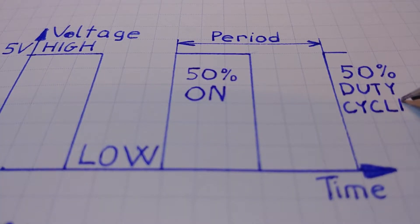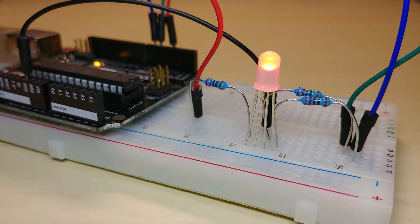So a 50% duty cycle means the signal is in the high state half the time. When we apply this to an LED our eyes kind of average out the on and off times making the LED dimmer. This kind of signal is called pulse width modulated signal or PWM for short.